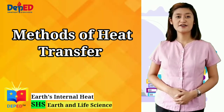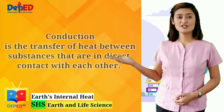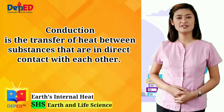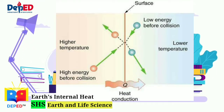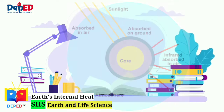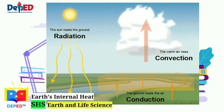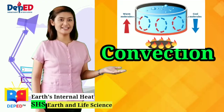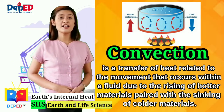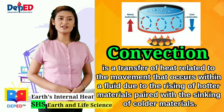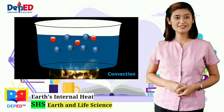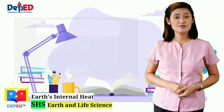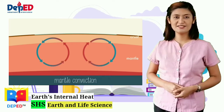Let us briefly discuss the methods of heat transfer mentioned earlier. Conduction is the transfer of heat between substances that are in direct contact with each other. This is the process by which heat energy is transmitted through collisions between neighboring atoms or molecules. Heat from the Earth's core and radiation from the sun is transferred to the surface of the Earth by conduction. Convection, on the other hand, is a transfer of heat related to the movement that occurs within a fluid due to the rising of hotter materials, paired with the sinking of colder materials.